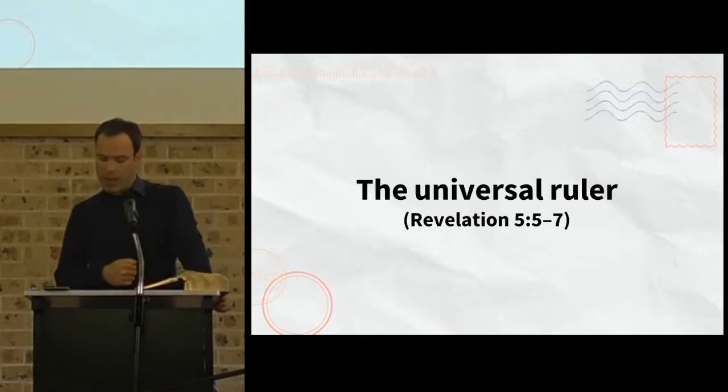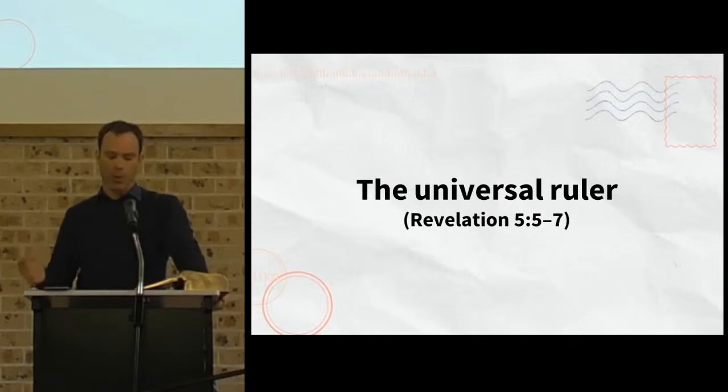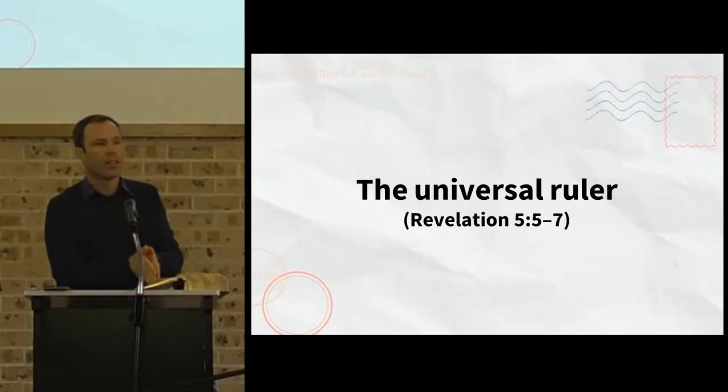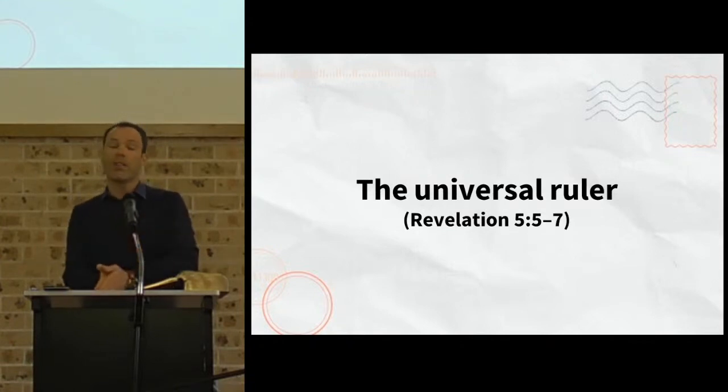And then in Isaiah 11, Isaiah uses the imagery of stump and root and branch to talk about this righteous ruler who's going to arise in the future. Specifically, he calls this ruler the root of Jesse, Jesse being the father of King David. But here in Revelation, he is called the root of David, presumably an even greater title for this great king.